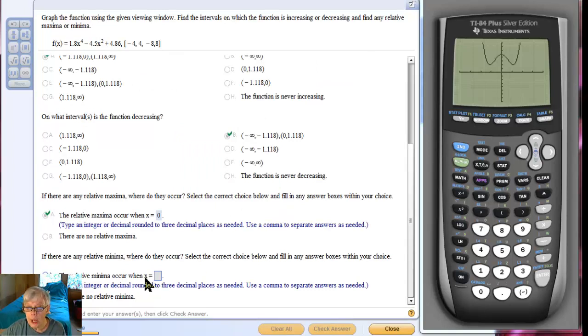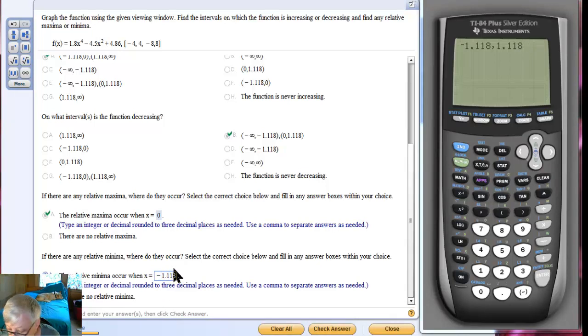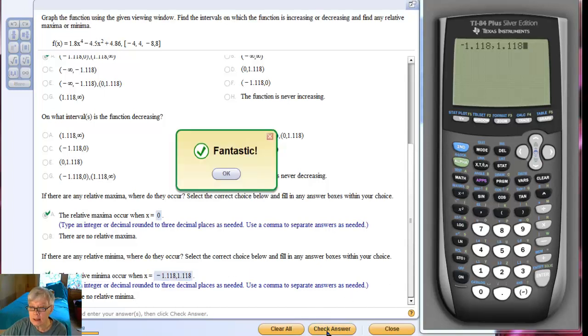The relative minima occur when x equals... type an integer or a decimal rounded to three decimal places as needed and use a comma to separate the answers as needed. Well, we already know that from these answers. The relative minima occur at negative 1.118 and at positive 1.118. So, that's what I'm going to type. Negative 1.118, comma, positive 1.118. So many buttons here.